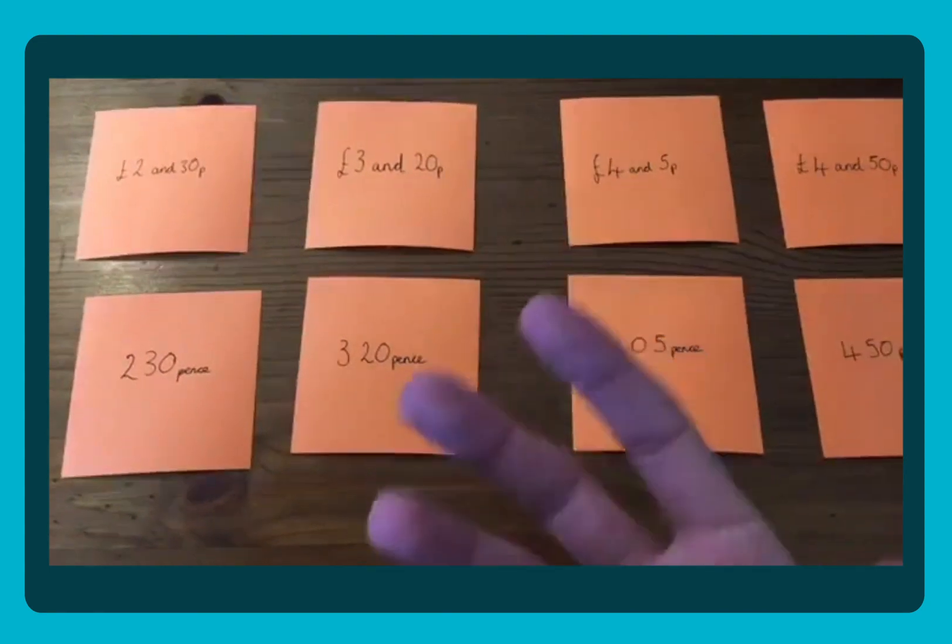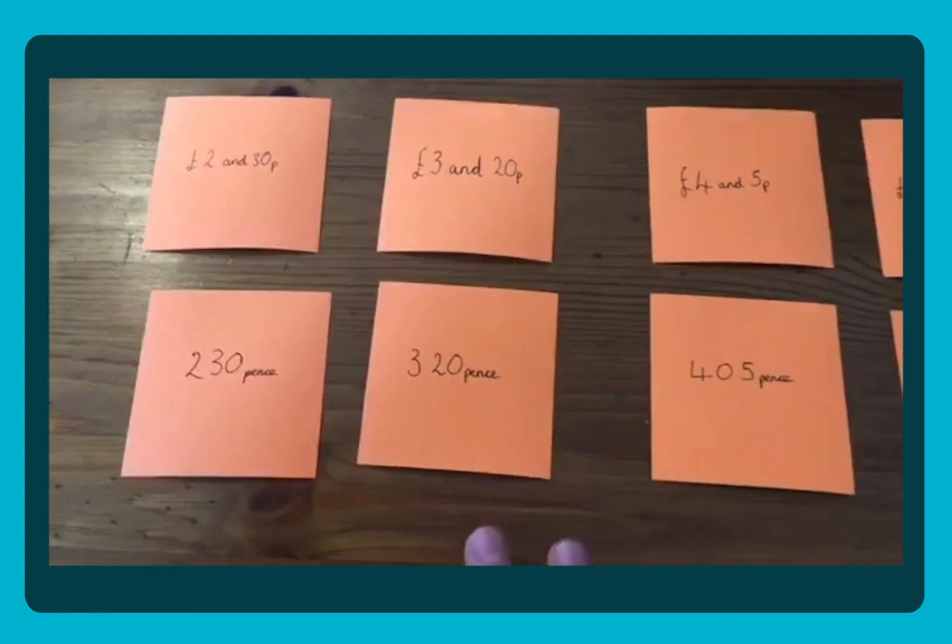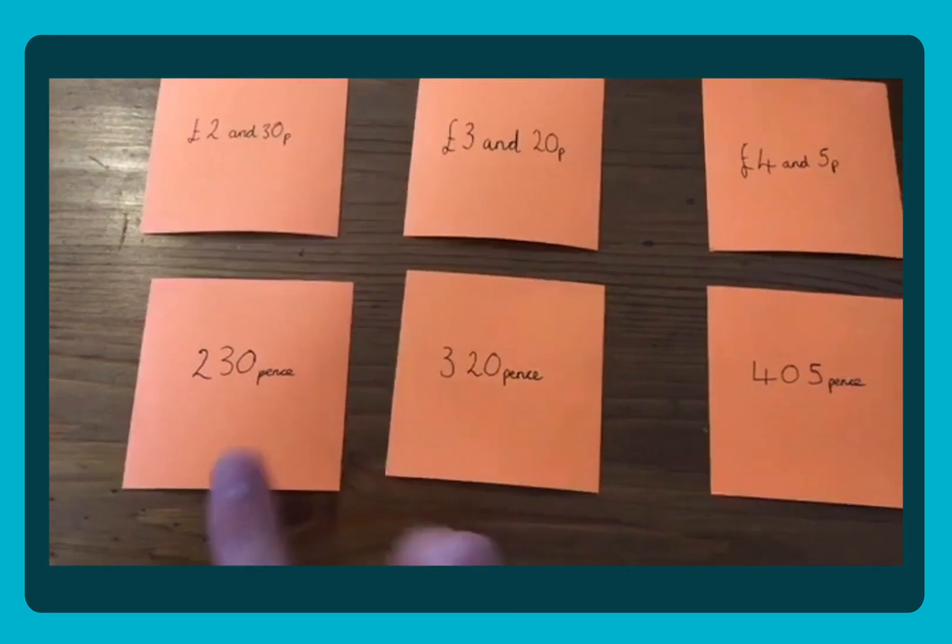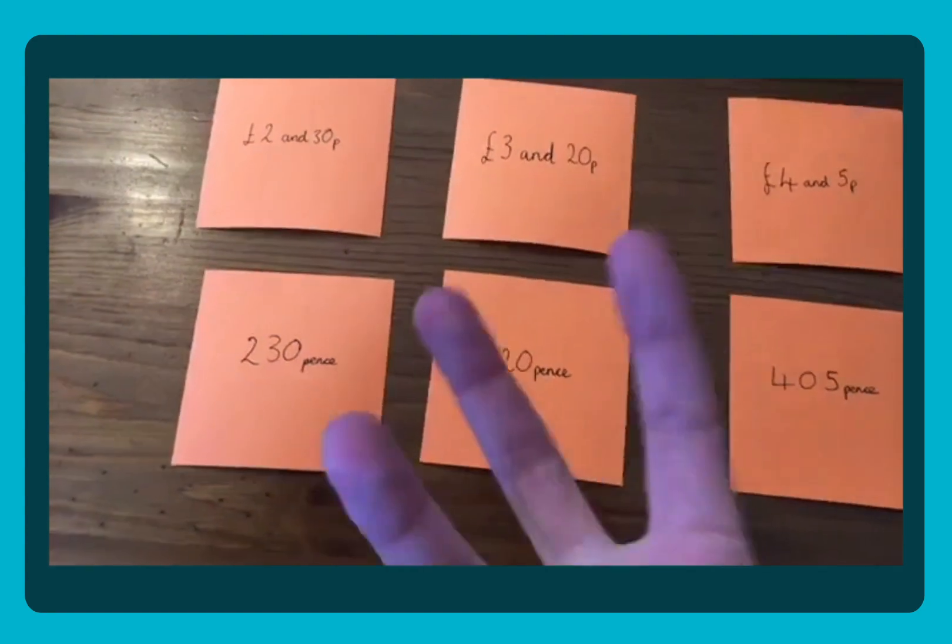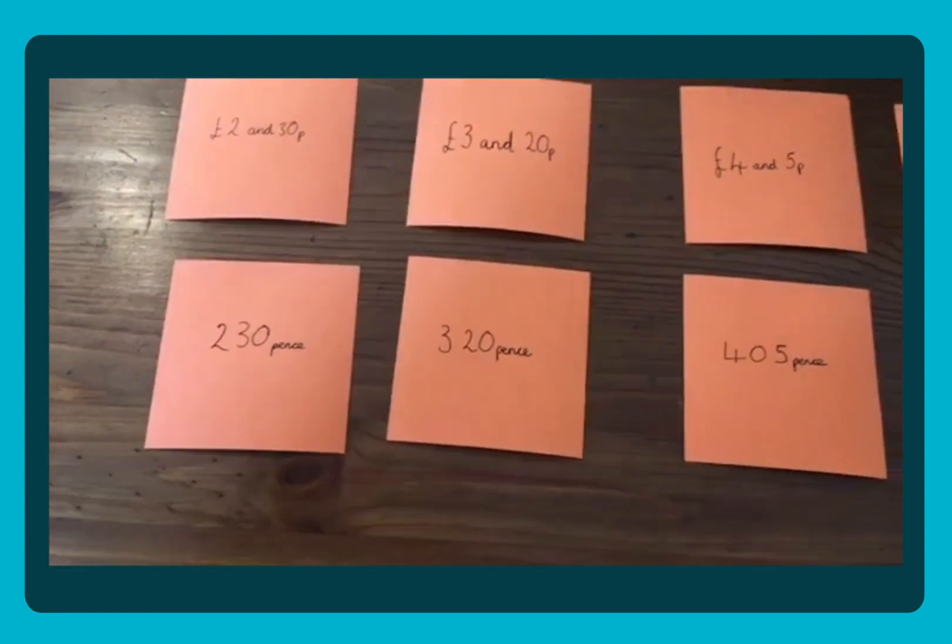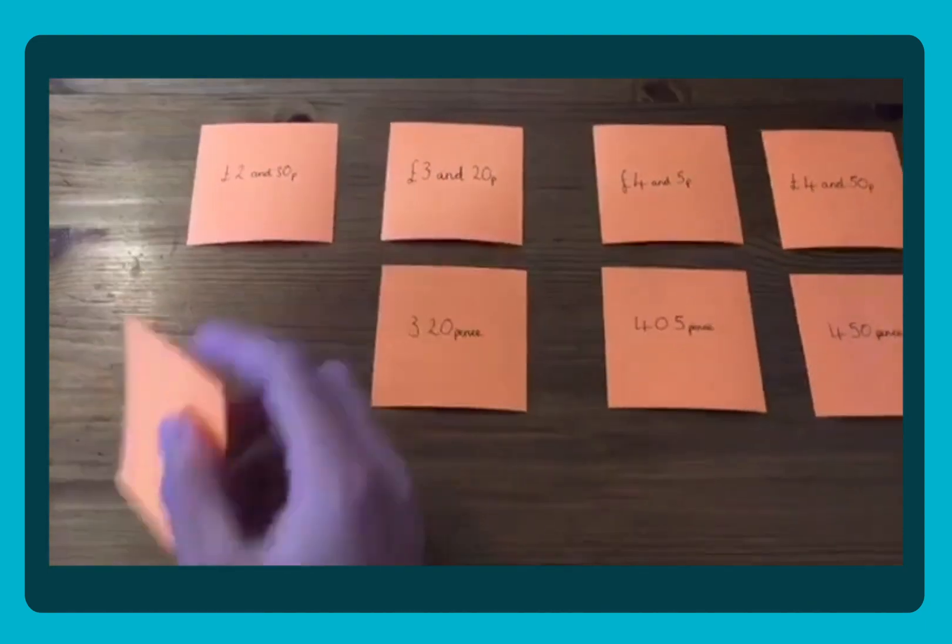Once you've got all your cards in pounds and pence and pence, you could make it a little bit trickier. I've used the same digits here, 230 pence, 320 pence, but made them different amounts. So it becomes a little bit trickier when you turn the cards over and you're trying to remember where those amounts are.